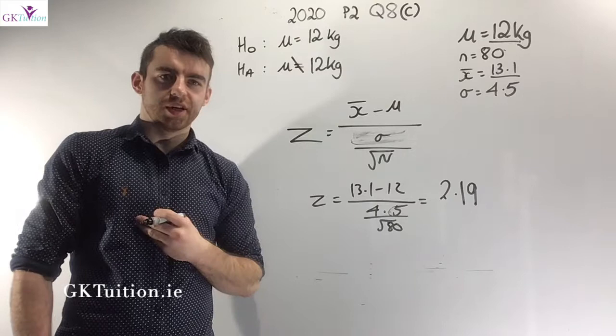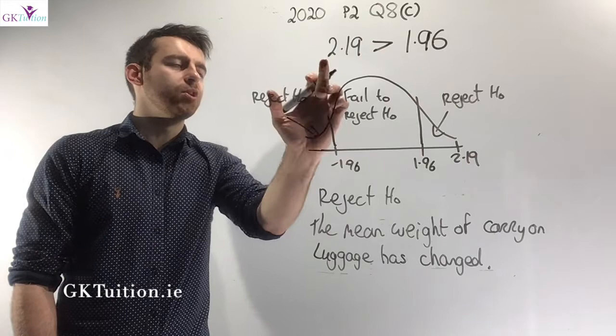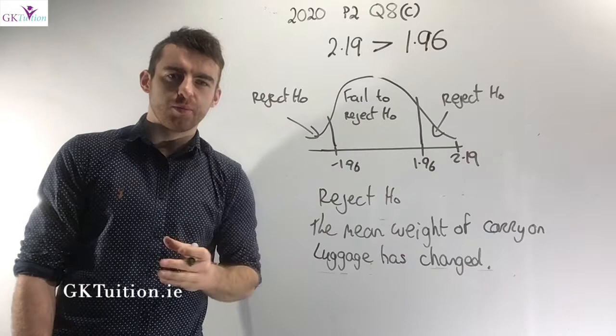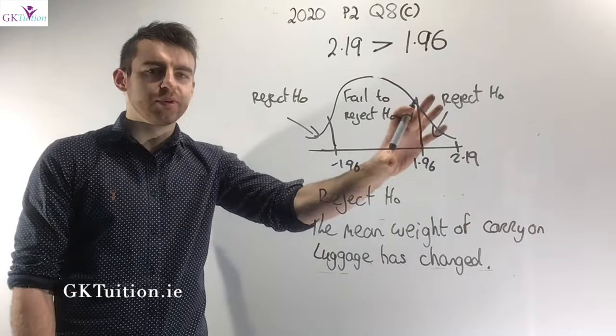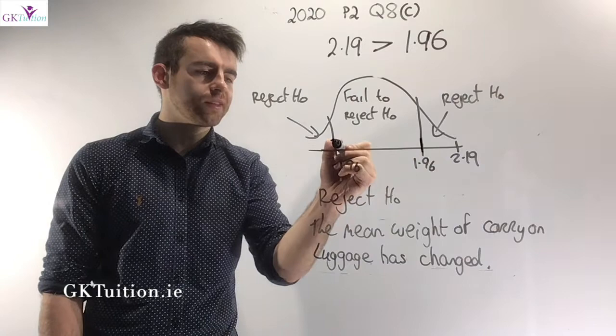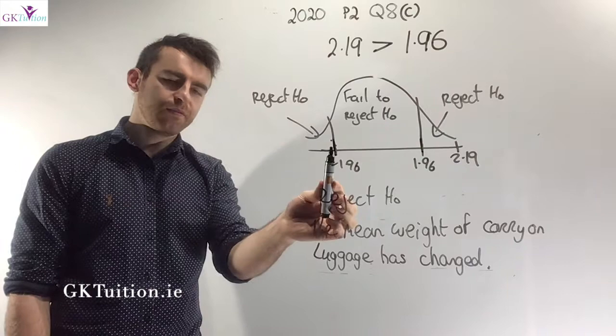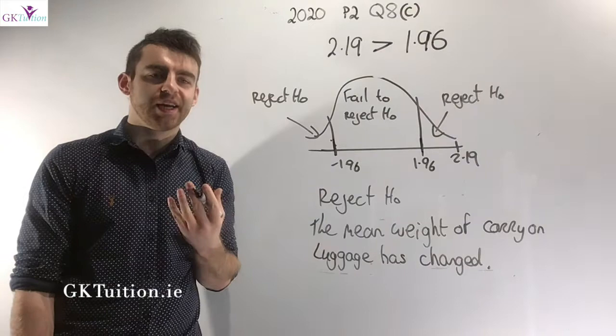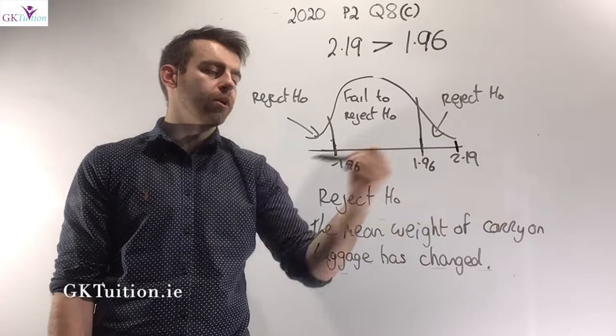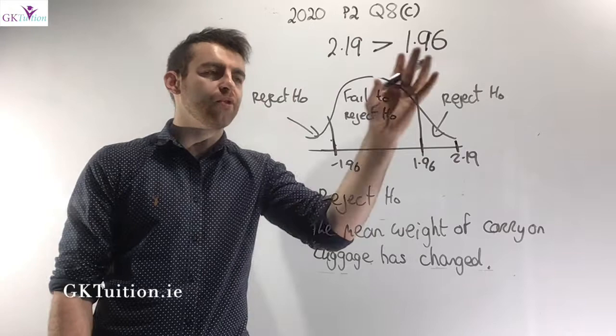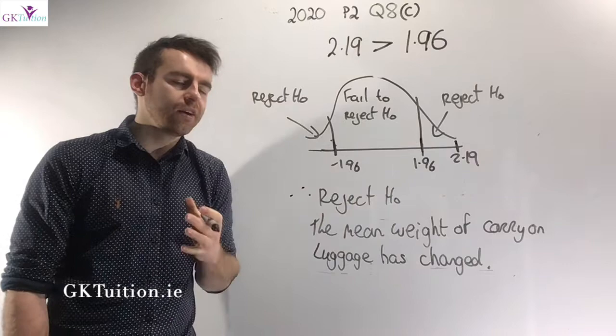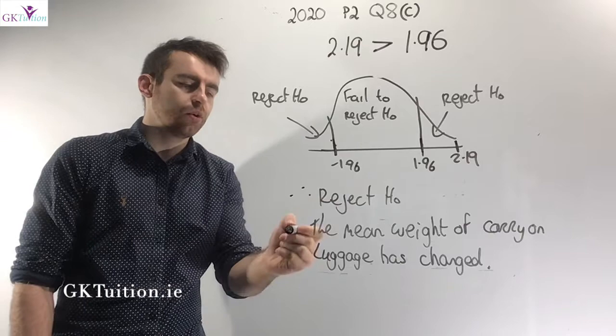Substituting in: z = (13.1 − 12) / (4.5 / √80) = 2.19. This is greater than 1.96. Starting with the inequality 2.19 > 1.96 — the Z-score is outside the range [−1.96, +1.96], which is the rejection zone. Graphically, the Z-score of 2.19 lies in the reject H₀ zone, so we reject H₀.